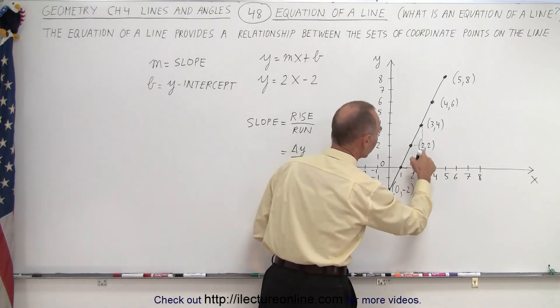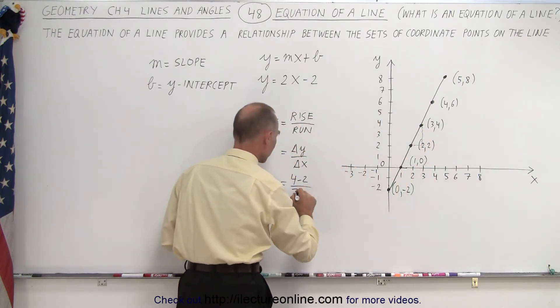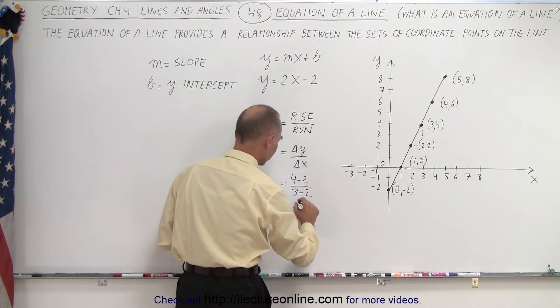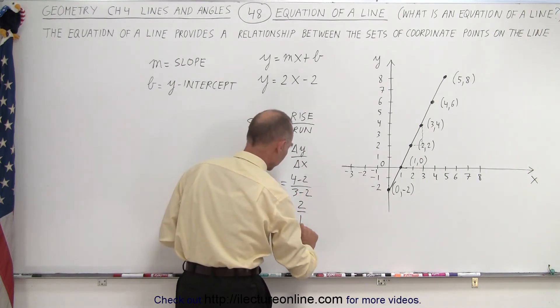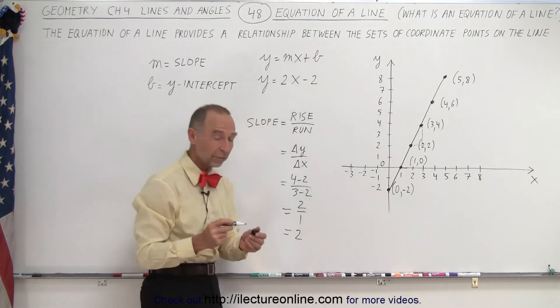And for the change in the x, we go from 2 to 3, so that's 3 minus 2. And see, that gives us 2 over 1, which is equal to 2. And therefore, that's where the slope comes from.